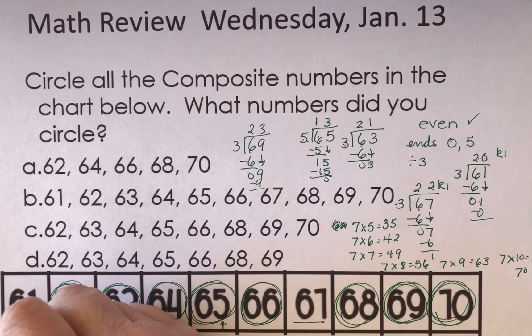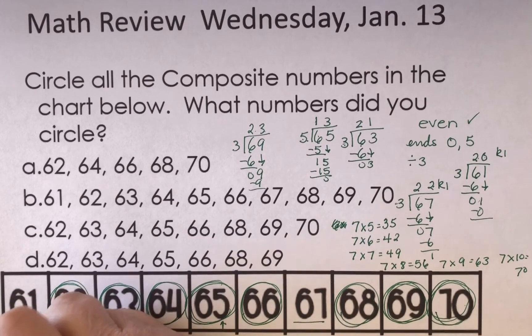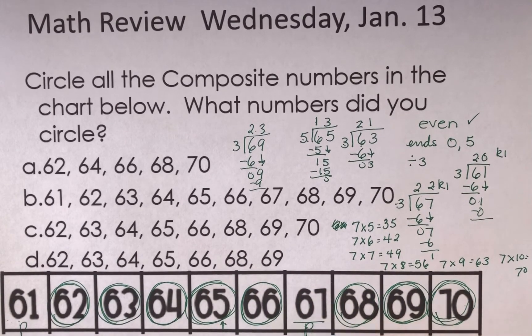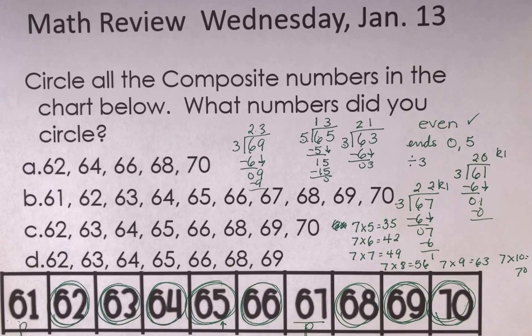So my prime numbers, prime numbers, prime numbers are 61 and 67. Now, how else could I figure this out? Let's take a look at what my choices are here.